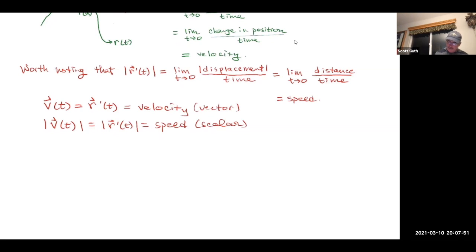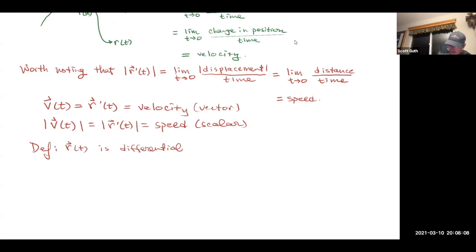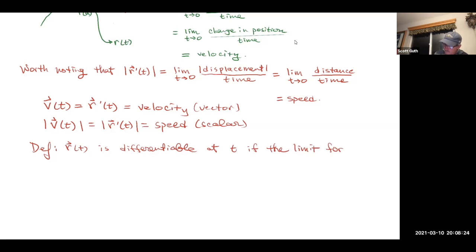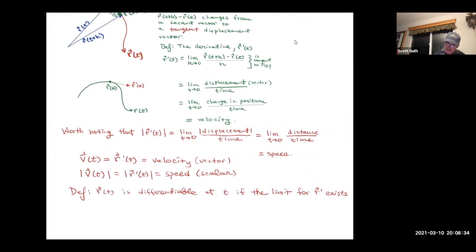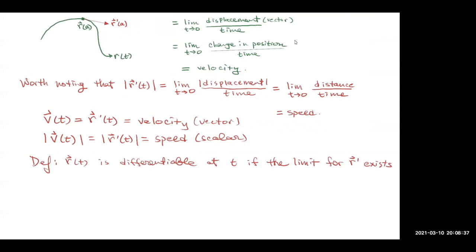Just a definition or two before I do an example. There's a definition that says r of t is differentiable at t if the limit for r prime exists. So that's what differentiable means.